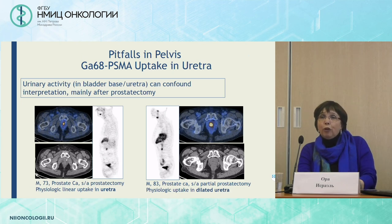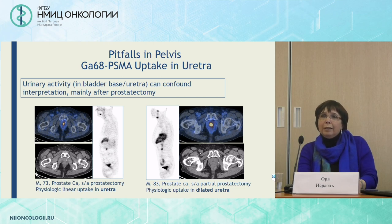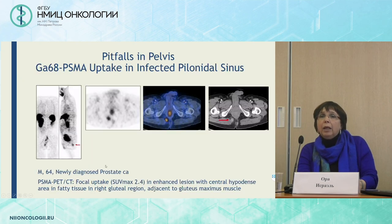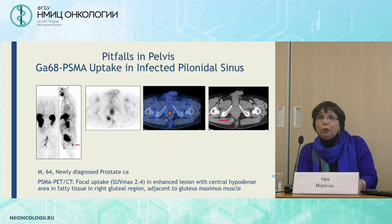There can be pitfalls when looking for primary prostate cancer recurrence in the pelvis, related to uptake in the ureter, which can be either focal and small or more enlarged when the ureter is dilated. There can also be uptake in other processes, like a pilonidal sinus — an infected one — that takes up PSMA in the proximity of the primary tumor in the prostate.